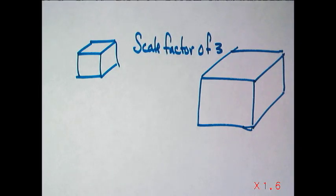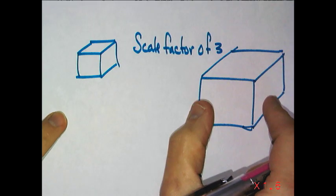Today we are going to cover the volume ratio between similar objects, and I have sketched out a rectangular prism and a scale factor of 3, another rectangular prism.